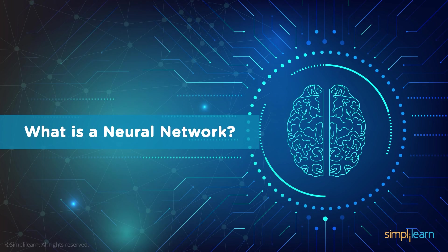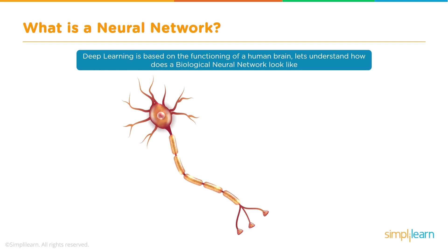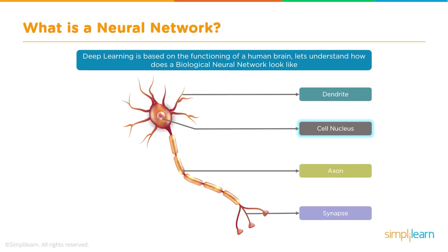Now, one of the major secrets of deep learning is the neural network. Deep learning works on and consists of neural networks. Neural network, or artificial neural network, is designed based on the human brain. The human brain consists of billions of small cells known as neurons. Artificial neural networks try to simulate the human brain. A biological neuron consists of the cell nucleus, dendrites on top, a long tail known as the axon, and synapses at the end of the axon.